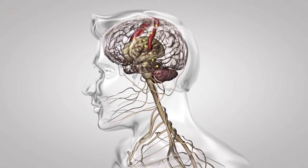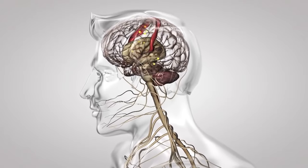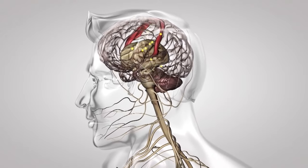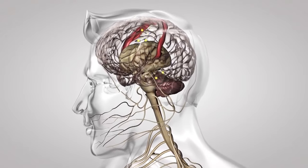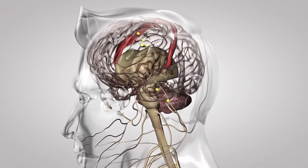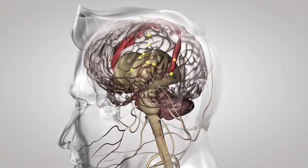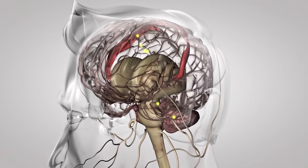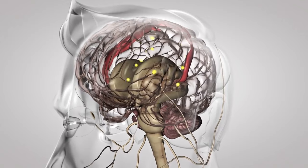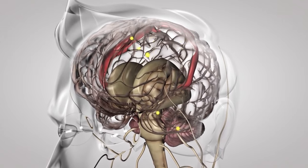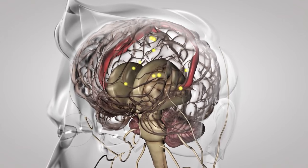There is much more to discuss regarding how the brain processes visual information, and we will elaborate on all of this in the future. But for now, we will stop here and move on to some other topics — let's check out the other senses next.